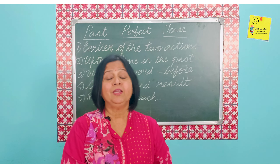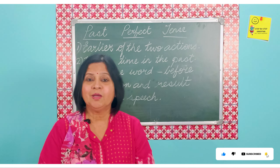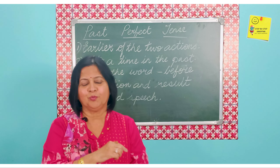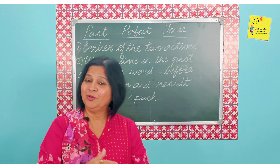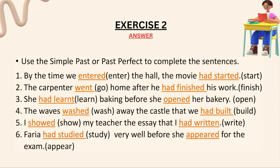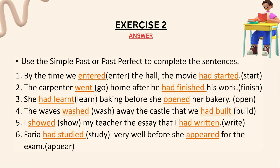Now, one more exercise: you have to see whether to fill in the blank with the simple past or the past perfect. Just identify the events taking place in the sentence — the event which took place before goes in the past perfect. Answer time: 'By the time we entered the hall, the movie had started.' The carpenter went home after he had finished his work. 'She had learned baking before she opened her bakery.'